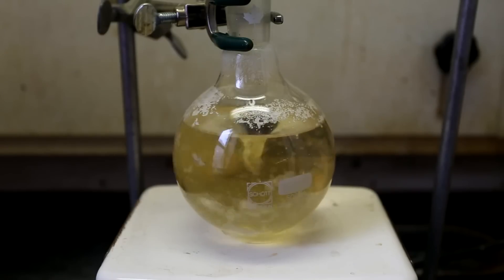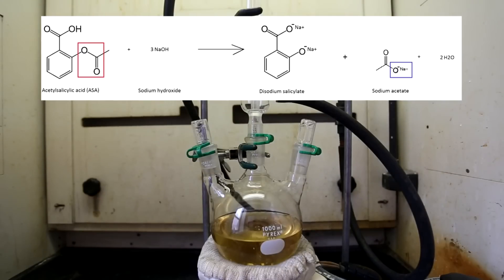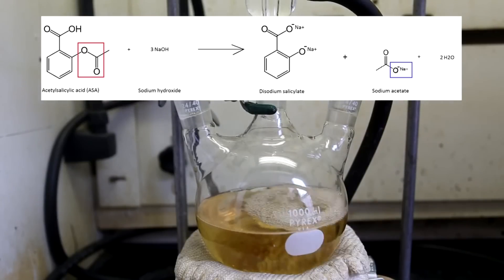This round bottom flask was now too full to carry out a reflux, so I transferred the solution to a large 3-necked 1 liter round bottom flask. Once the solution started boiling, I refluxed it for about 20 minutes. The reaction between the sodium hydroxide and the acetylsalicylic acid is a base ester hydrolysis reaction. The ester in the red box is hydrolyzed by the sodium hydroxide.